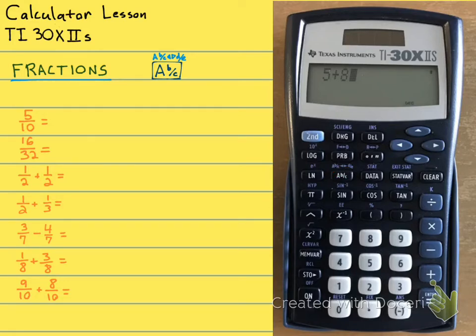ABC, easy as 1, 2, 3. So to type in 5 over 10, what we're going to do is press 5, ABC, 10, and then hit equals. 5, ABC, 10, equals. And it automatically reduces this fraction for you. It's going to give you back 1 half.